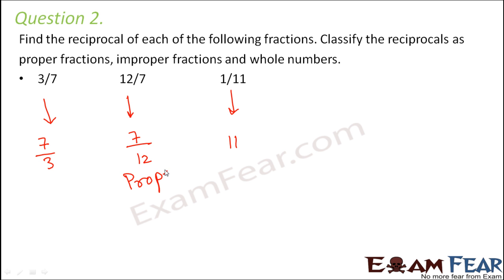Where do you see the numerator is less than the denominator? Here. So this is a proper fraction. Which is an improper fraction? Definitely this one, because the numerator 7 is greater than the denominator 3. And this is a whole number.